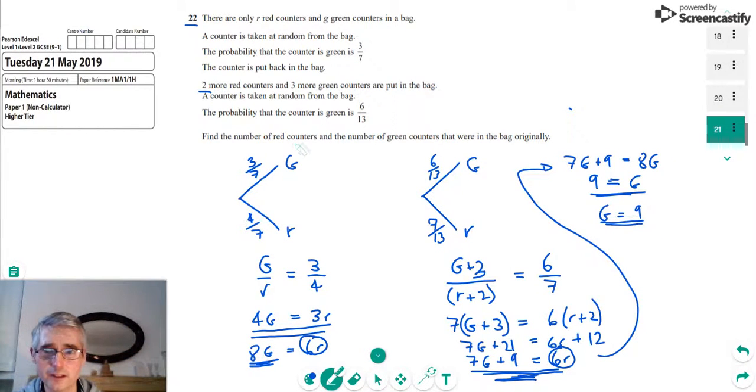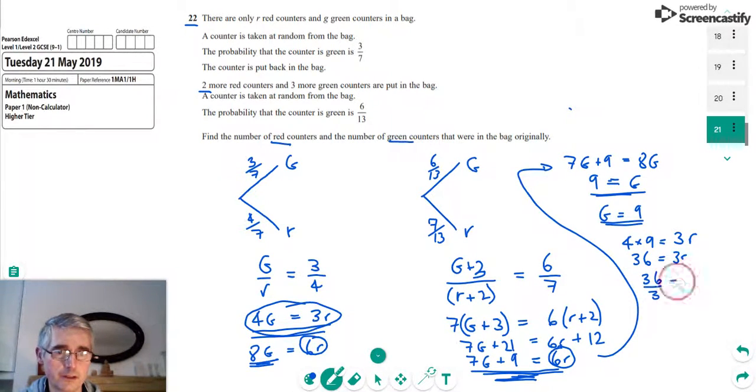Now we also need to find the initial number of red counters. We can find the number of red counters by substituting that into our equation here. We can say that 4 times 9 is equal to 3R. So 4 times 9 is 36 equals 3R. Divide both sides by 3, and we'll end up with 36 over 3 equals R. So R is equal to 12.